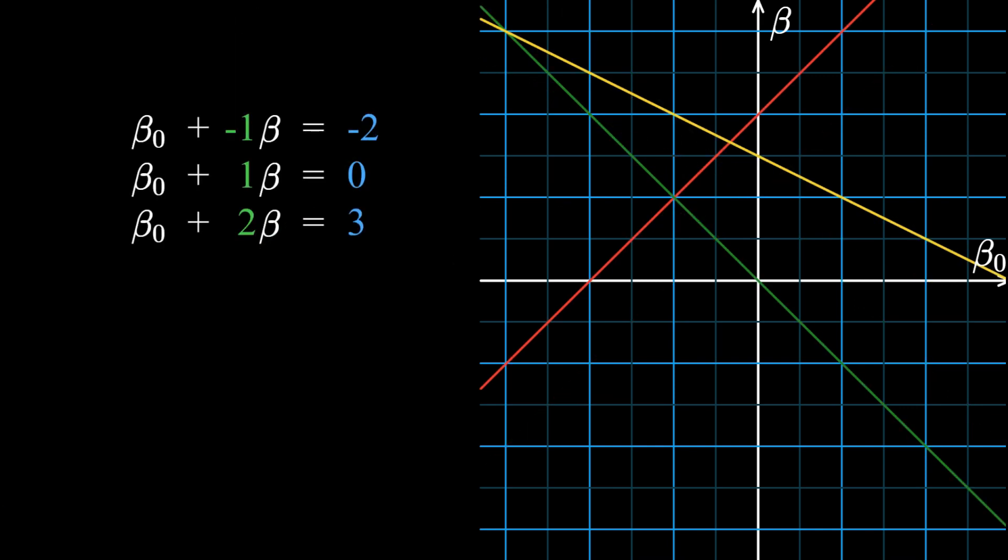Anyway, since we have more equations than unknowns, we have what's called an over-determined system of equations. And there are usually no solutions in this case.